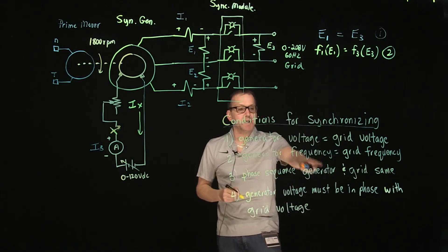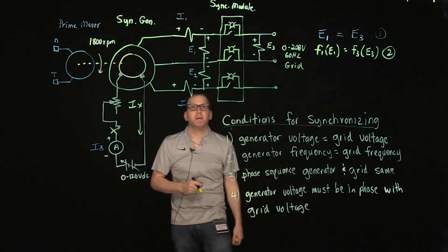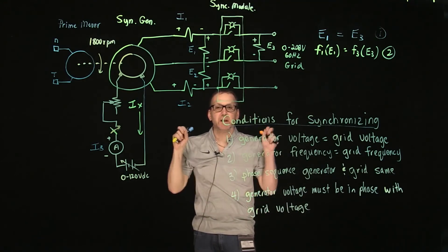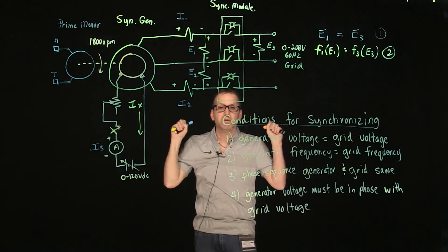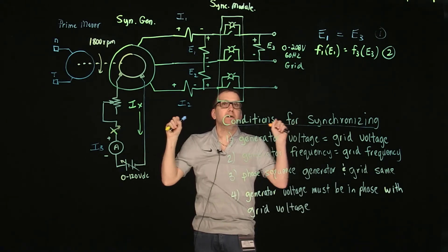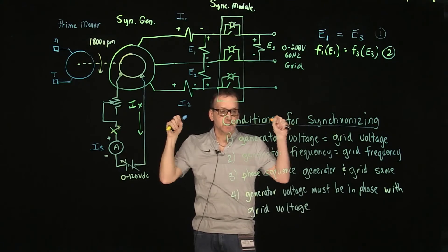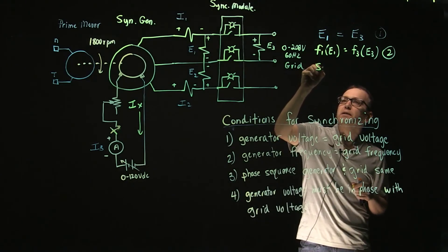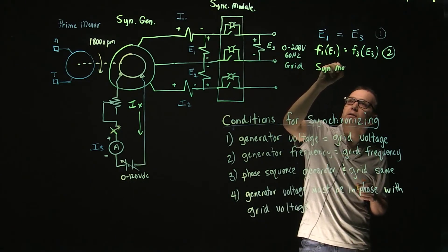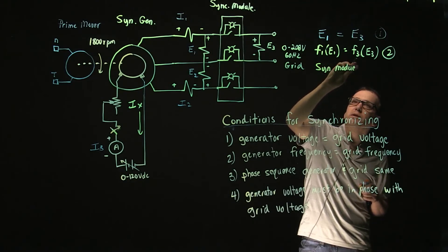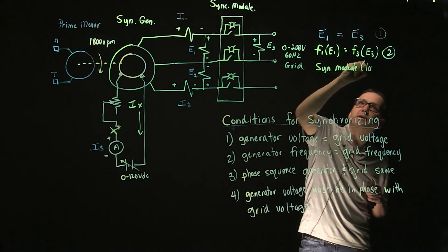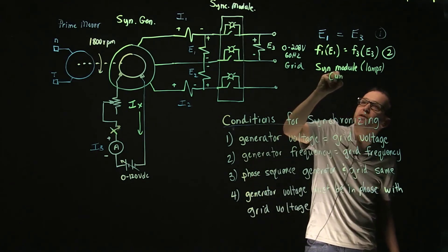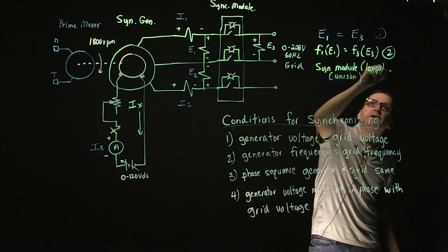For condition number three, the phase sequence of the generator and the grid must be the same. We can determine this by looking at the three lamps on the synchronizing module. If the three lamps are flashing in unison — going from light to dark all at the same time — the two systems have the same phase sequence.